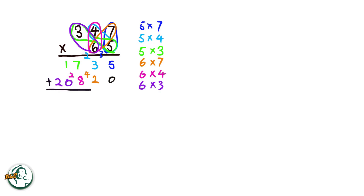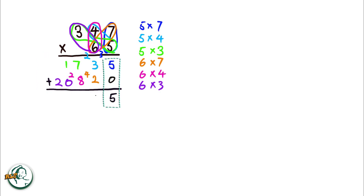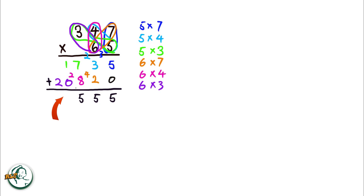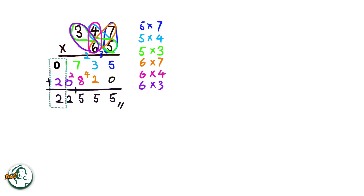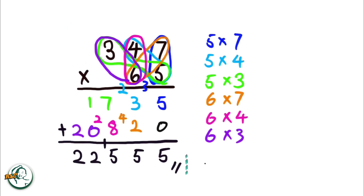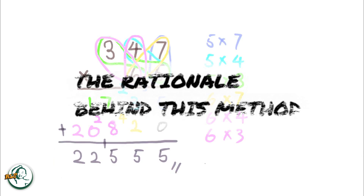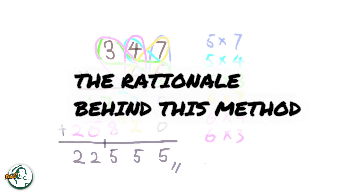Now we add these two sets of products. Adding 0 and 5 gives us 5, 2 plus 3 is 5, and 8 plus 7 is 15. We write down the 5 and carry over the 1. 0 plus 1 is 1; adding the carried over 1 to 1, we get 2. 2 plus 0 is 2. Therefore, the product of 347 and 65 is 22,555.